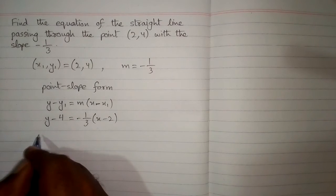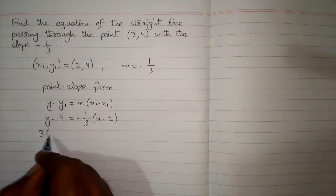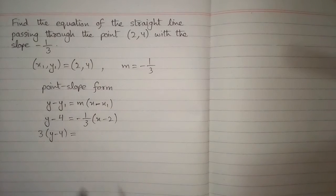Now we take this 3 on this side of equation. So it will be multiplied by y minus 4.